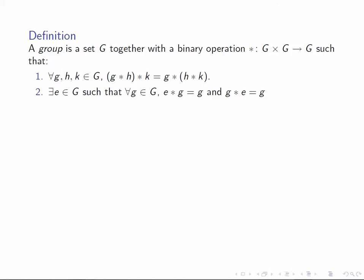Secondly, there exists an identity element for this operation. In other words, there exists an element of G, let's say E, such that for all g in G, E star g is equal to g and g star E equals g.